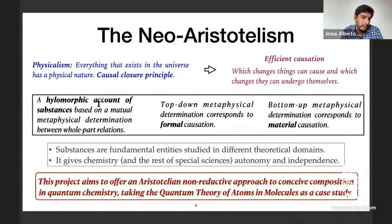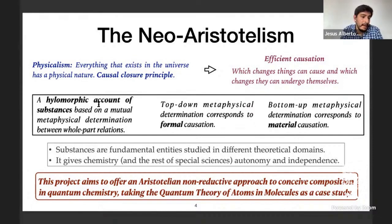A hylomorphic approach based on formal and material causation conceives the chemical level and the microphysical or quantum level as mutually determined. The causal form is understood as a top-down metaphysical determination — that is, a determination from the chemical world to the quantum world. The material cause is understood as a bottom-up metaphysical determination from the microphysical world to the chemical world. In the context of a hylomorphic approach, substances correspond to fundamental entities, and it is possible to provide chemistry and the special sciences with independence and autonomy. The present project aims to offer a non-reductive Aristotelian hylomorphic approach to conceive composition in quantum chemistry, taking the quantum theory of atoms in molecules as a case study.